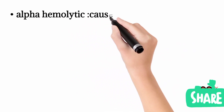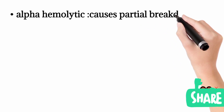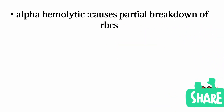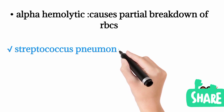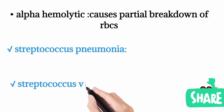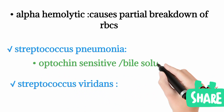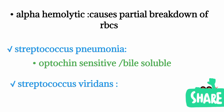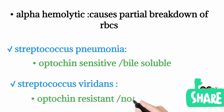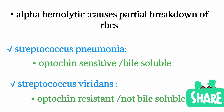Another category is alpha-hemolytic bacteria. Alpha-hemolysis means partial breakdown of the red blood cells, whereas beta was complete breakdown. The organisms in the alpha-hemolytic category include Streptococcus pneumoniae and Streptococcus viridans. These should be further differentiated on the basis of optochin sensitivity and bile solubility. Streptococcus viridans is optochin resistant and not bile soluble, whereas Streptococcus pneumoniae colonies will be destroyed by optochin medium — they are optochin sensitive and bile soluble.